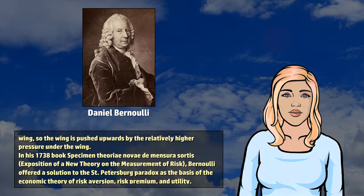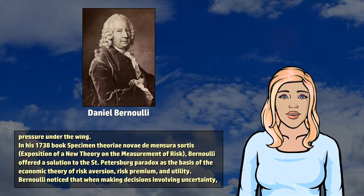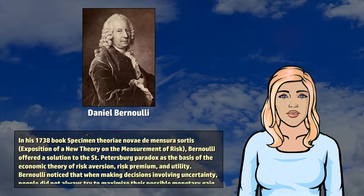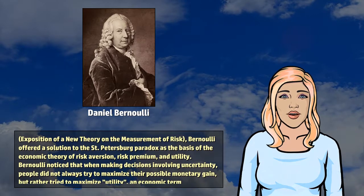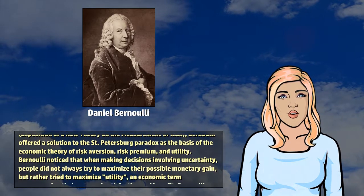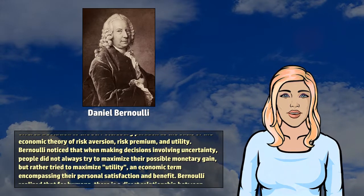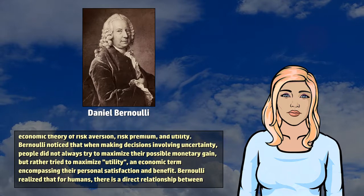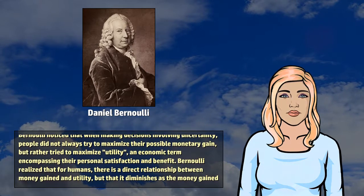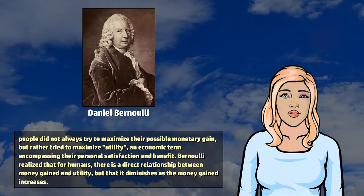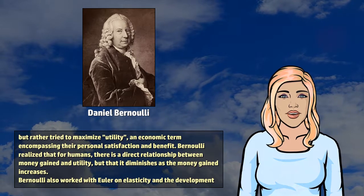In his 1738 book Specimen Theoriae Novae de Mensura Sortis, Exposition of a New Theory on the Measurement of Risk, Bernoulli offered a solution to the St. Petersburg paradox as the basis of the economic theory of risk aversion, risk premium, and utility. Bernoulli noticed that when making decisions involving uncertainty, people did not always try to maximize their possible monetary gain, but rather tried to maximize utility, an economic term encompassing their personal satisfaction and benefit.